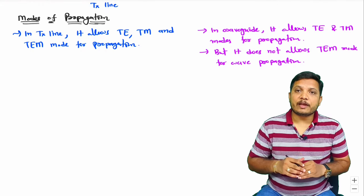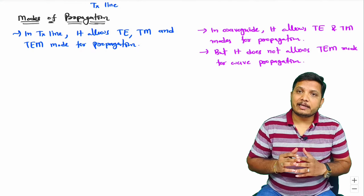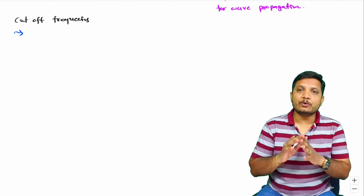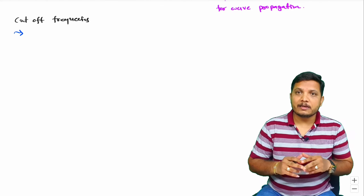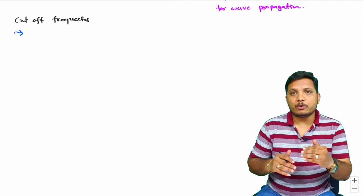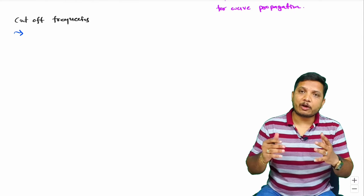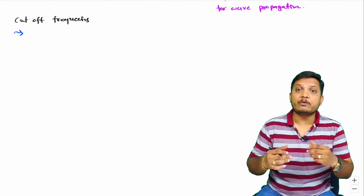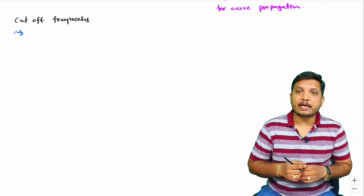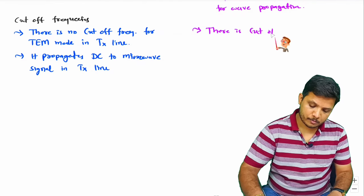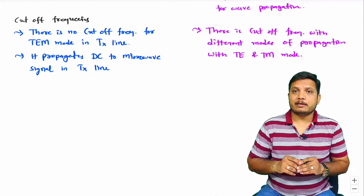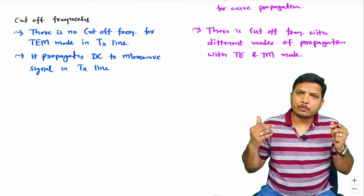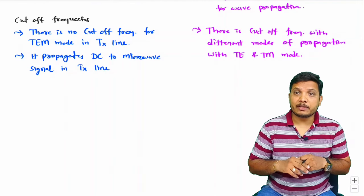Now let us discuss cutoff frequencies in transmission lines and waveguides. With transmission line in TEM mode, there is no such phenomenon as cutoff frequency — it propagates signals from zero frequency up to microwave frequencies without any cutoff frequency.